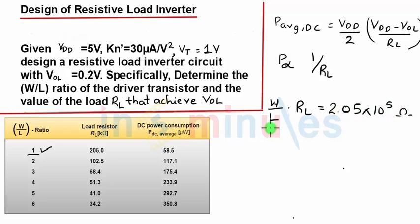So if I substitute W by L as 1 to 6, these are the corresponding values of RL which I'll get, and this is the corresponding value of the DC power dissipation which I'll get by substituting. This clearly shows that my power dissipation keeps on increasing if my load resistor keeps on decreasing.